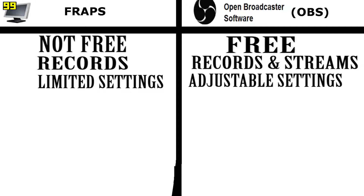FRAPS has limited settings in that you can't really tweak anything — all that it does is record at the source quality. OBS has lots of adjustable settings that you can tweak and get it the way that you want it, get it the quality that you want, but that's also stuff you have to do manually, so you'll have to know what you're doing.